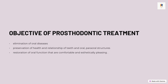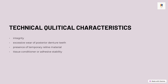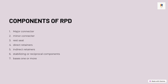Regarding technical quality — this slide explains on what basis you evaluate the prosthesis being provided to the patient. The first thing you evaluate is integrity, then excessive wear of posterior denture teeth, presence of temporary reline material, tissue condition, and adhesive stability. These are the points on which a prosthesis is evaluated.